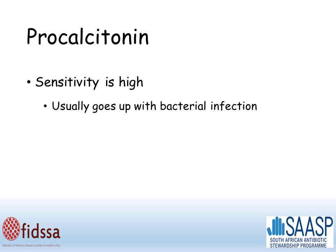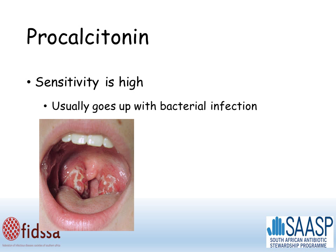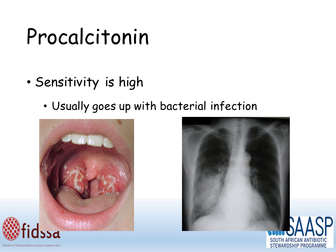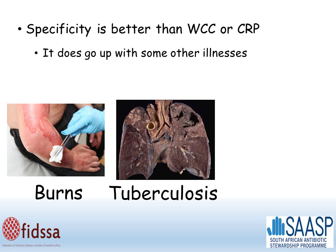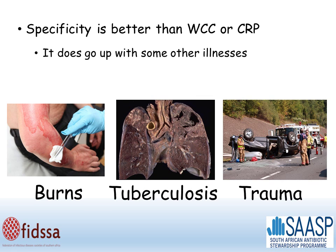Moving on to procalcitonin. Once again, the sensitivity is high, which means it usually goes up with typical bacterial infections. The specificity is better than for white cell count or CRP, but it does go up with some other illnesses such as burns, tuberculosis, and trauma.